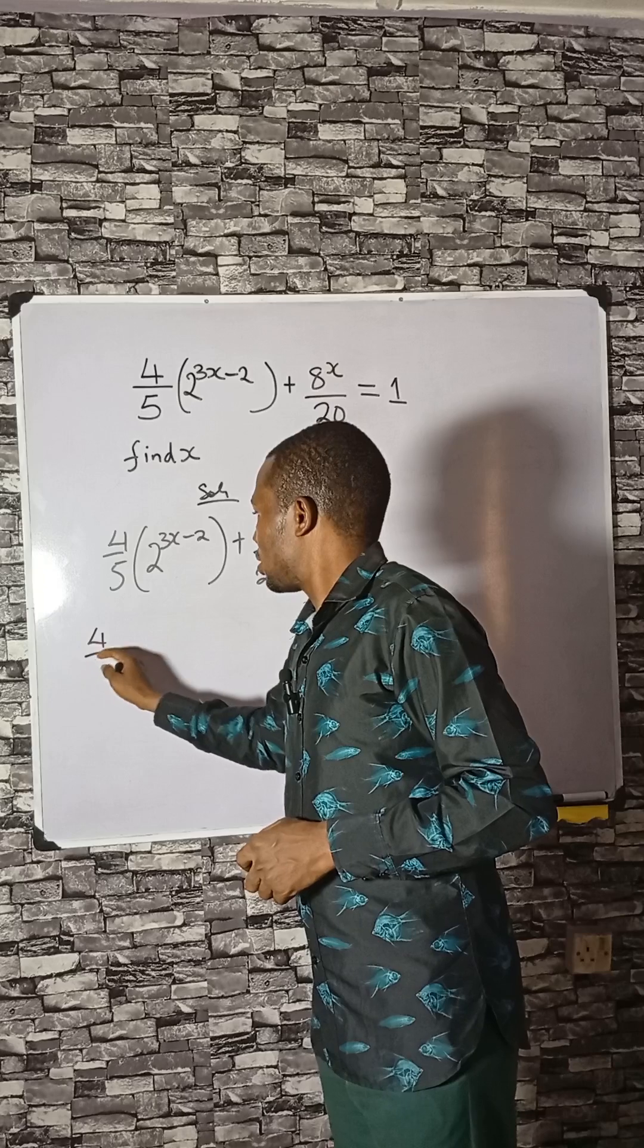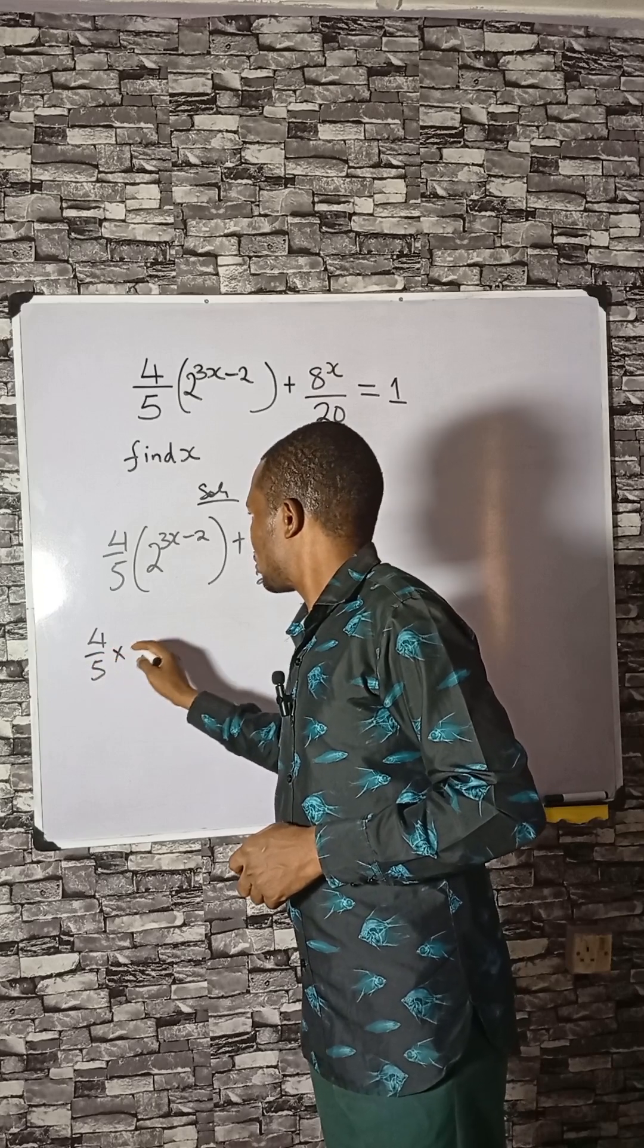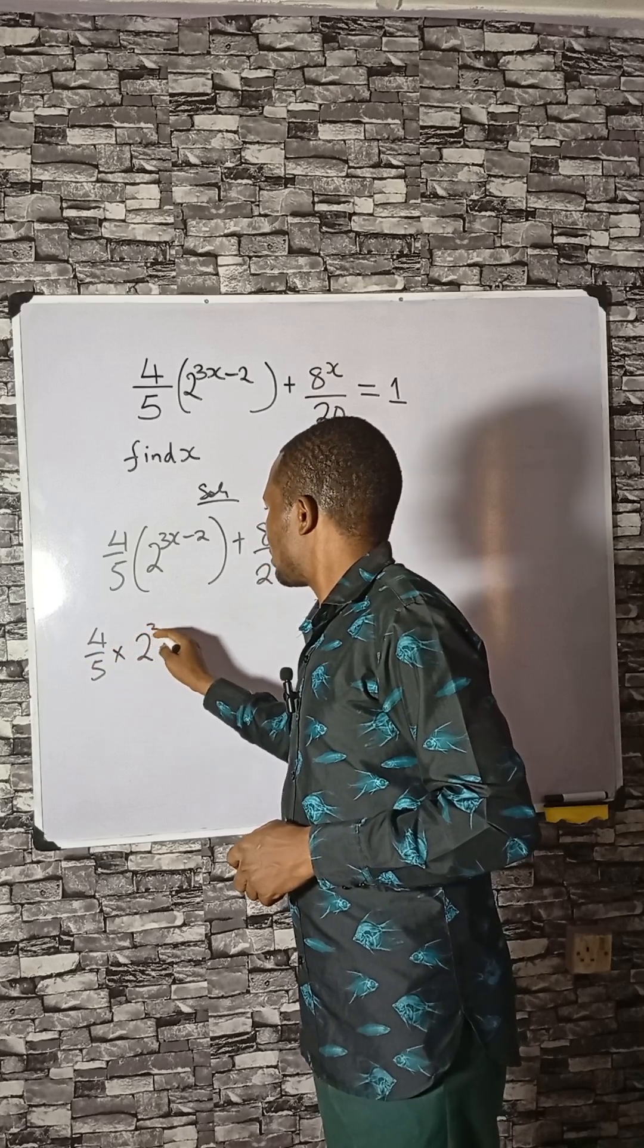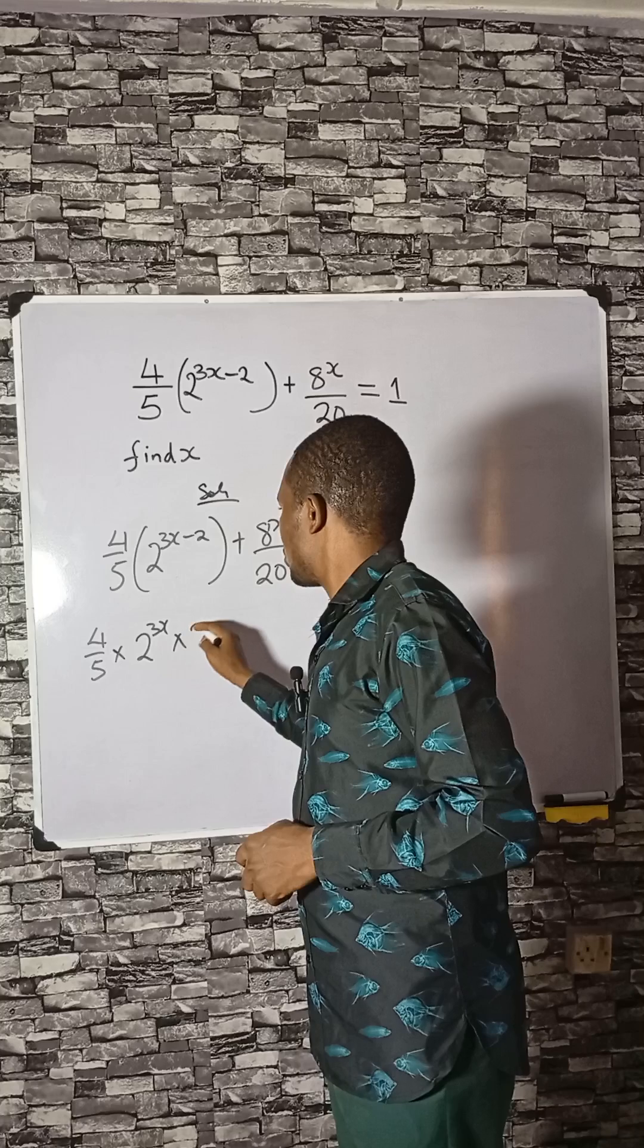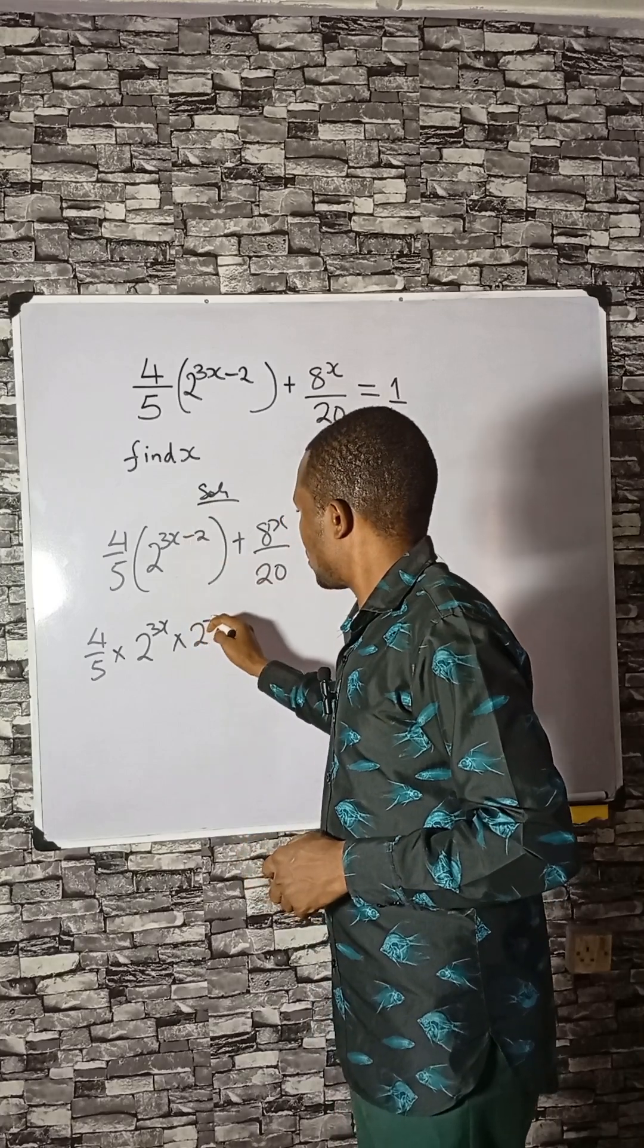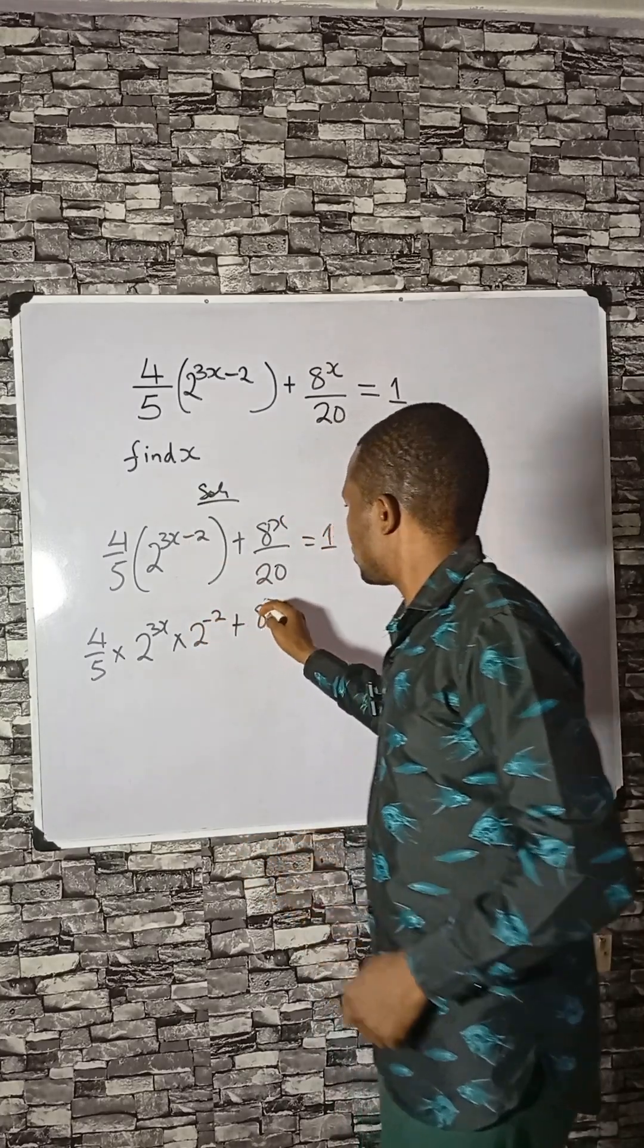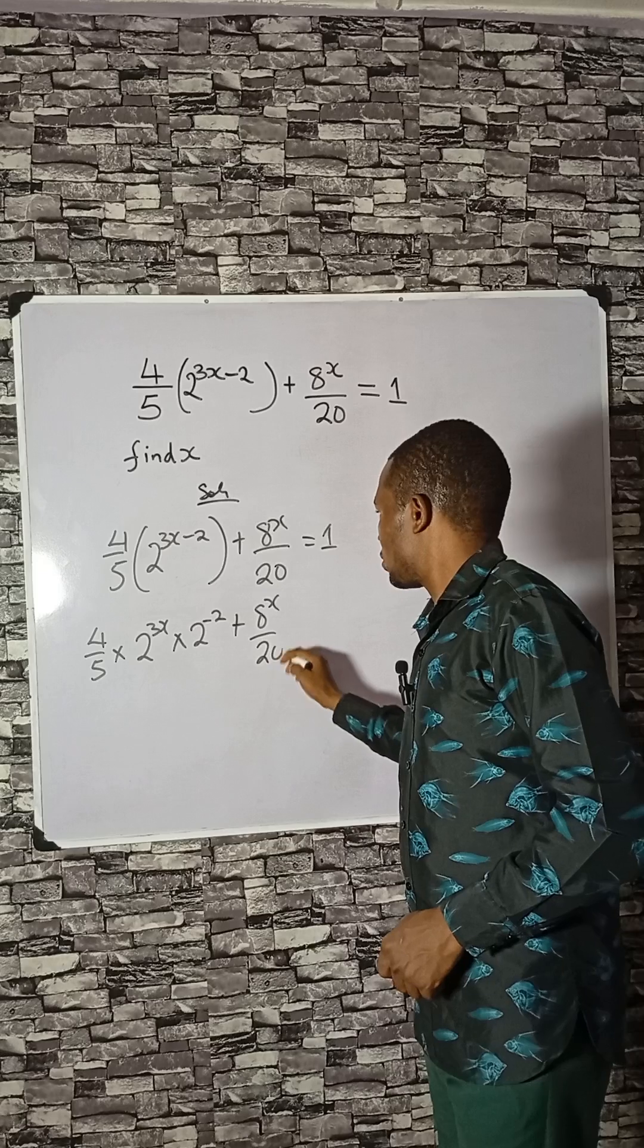You can write this as 2 divided by 3x times 2. We can split this equals to 1.